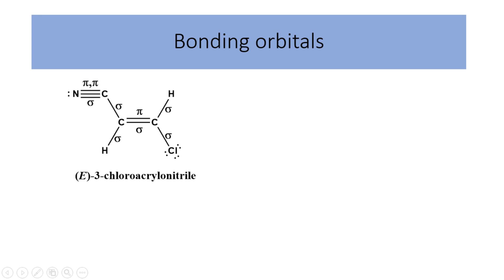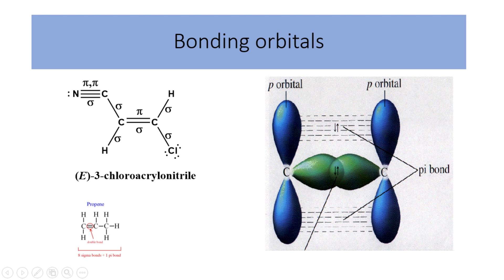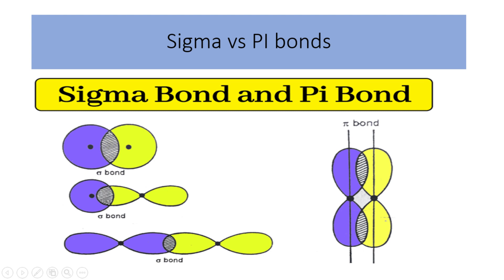Let us discuss the bonding orbitals. If you consider this molecule, for example: single bonds are sigma, double bonds consist of one sigma bond and one pi bond, whereas triple bonds have one sigma bond and two pi bonds. Let us take propene as an example. In the case of the sigma bond, which is visualized in green, it is formed by the overlap of atomic orbitals along the nuclear axis, resulting in electron density above and below the nuclei of the bonding atoms, contributing to the formation and stability of the covalent bond. This bond is stronger than the pi bond and allows free rotation around the bond axis. In the case of the pi bond, it is formed by the overlap of parallel orbitals perpendicular to the nuclear axis, and it restricts rotation around the bond axis.